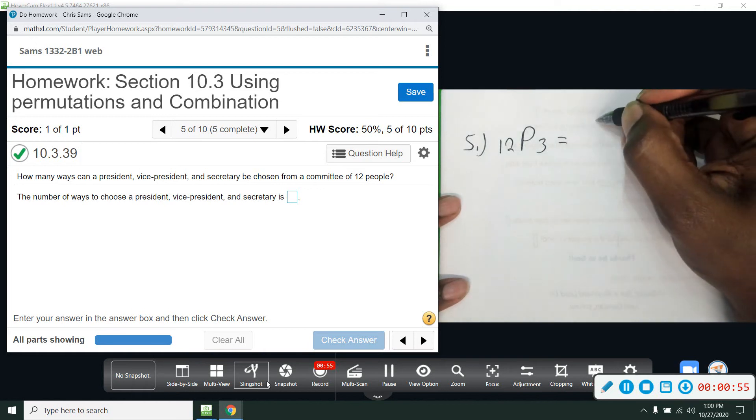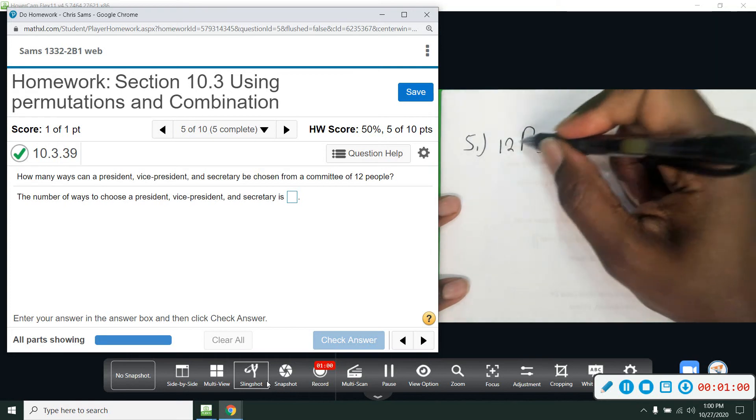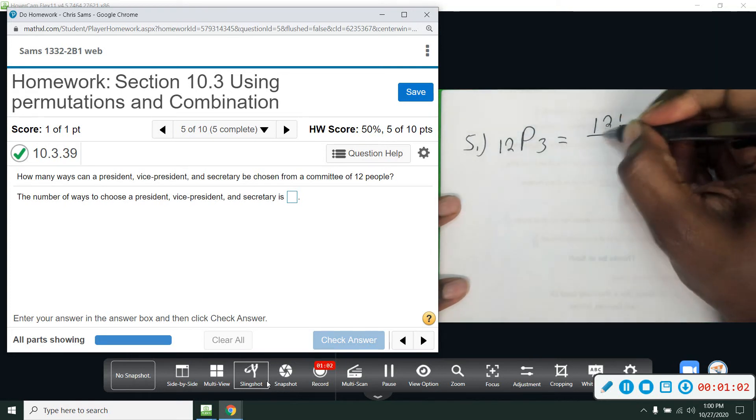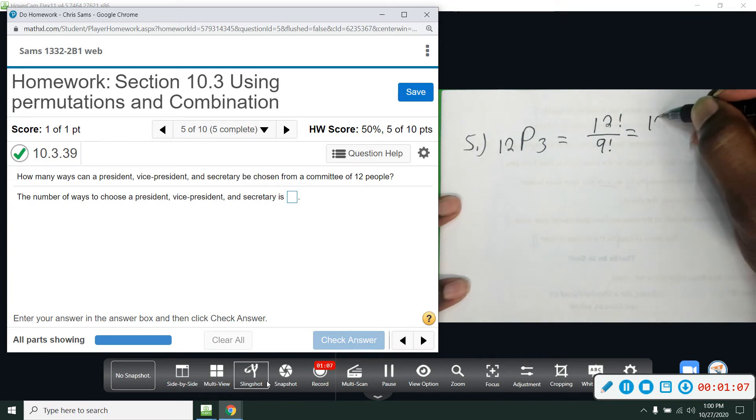So the formula that we need is 12 factorial over 12 minus 3. I'm going to go ahead and do that. 12 minus 3 is 9, so over 9 factorial. And then we will have to do 12 times 11 times 10 times 9 factorial. We'll stop there, and the 9 factorial on the bottom will divide out. So 11 times 12 is 132 times 10 is 1320.